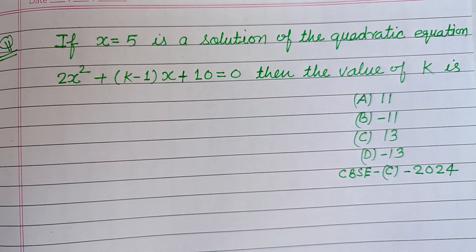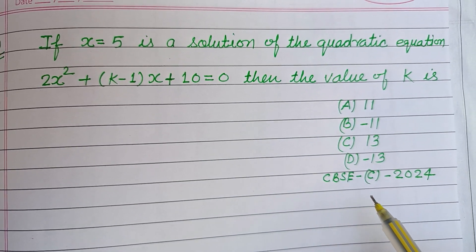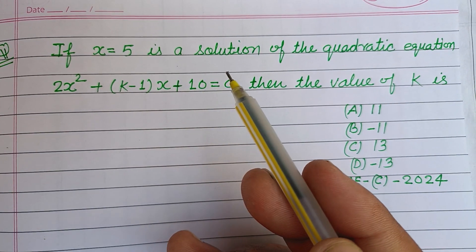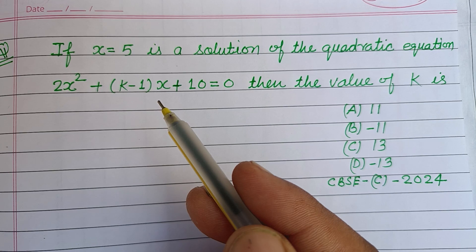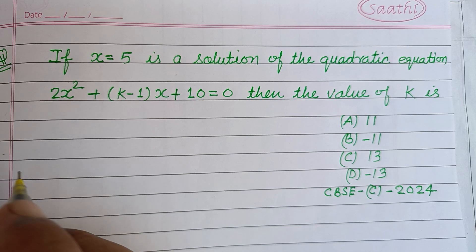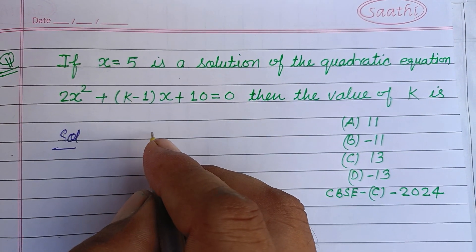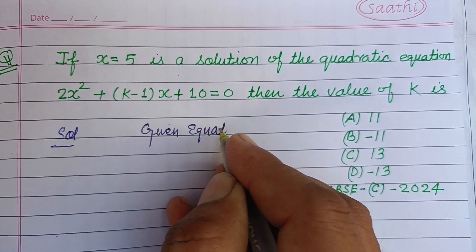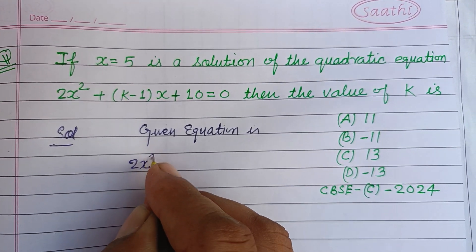Hello viewers, welcome to this YouTube channel. This is a question from CBSE Compartment exam 2024 class 10. If x equals 5 is a solution of the quadratic equation 2x² + (k-1)x + 10 = 0, then the value of k is. So student, here the given equation is 2x² + (k-1)x + 10 = 0.